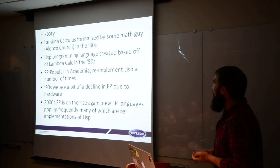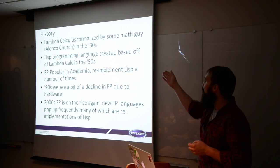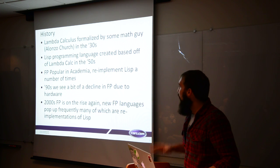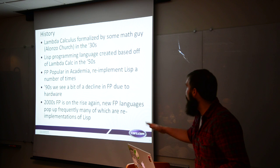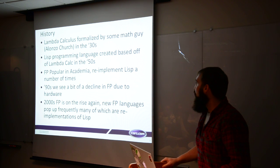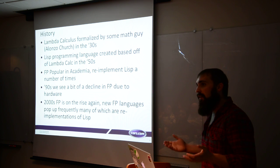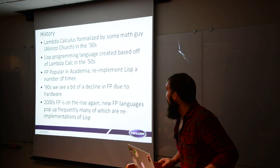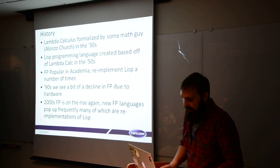So the history part. It started with lambda calculus that came around about the 30s. From there, someone developed LISP in the 50s based entirely off of lambda calculus. For a long time, FP was pretty popular in academia. You'd need a lot of resources due to memory consumption and a few other things that functional programming needs that weren't really there at the time. So it started falling off around the 90s. Then in the 2000s, FP started picking up again. Our hardware was much better. We had better ways of optimizing our functional programs. Now new functional programming languages pop up pretty frequently, and for some reason everyone wants to read and implement LISP constantly.